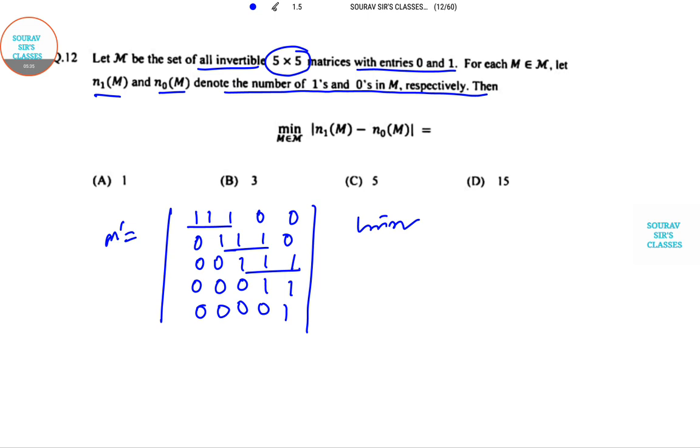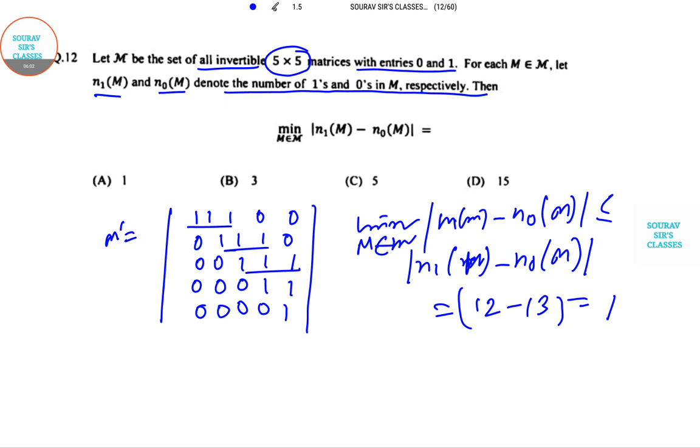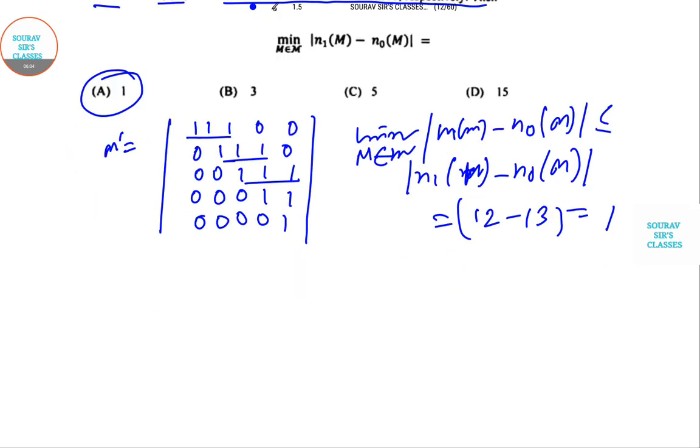This is the way to remember. The minimum value is min_{M∈M} |N₁(M) - N₀(M)|, which is nothing but |12 - 13| = 1, which is our answer.